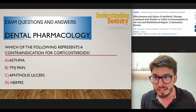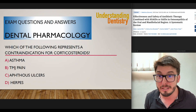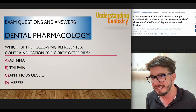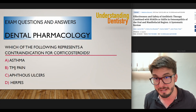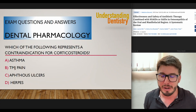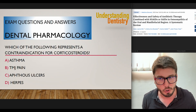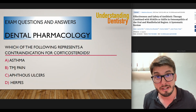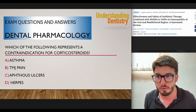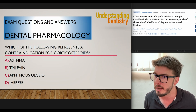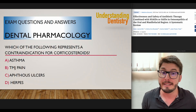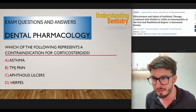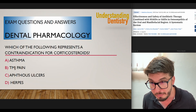Let's review all the alternatives. Asthma is absolutely an indication for steroids because you cannot use NSAIDs — don't forget NSAIDs are actually bad for asthma, especially naproxen. Ibuprofen is a little bit better. Corticosteroids are usually better for patients with asthma, so it's not letter A. TMJ pain is also an indication for steroids — absolutely an indication — so not letter B either.